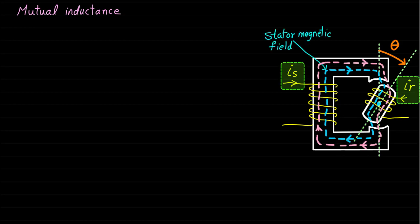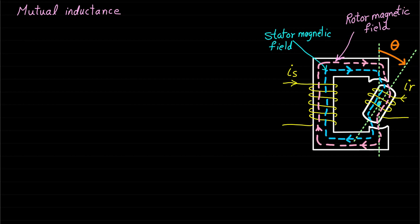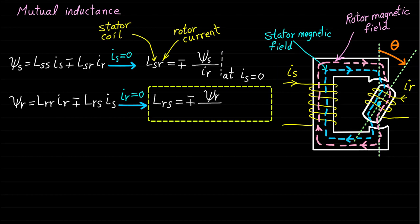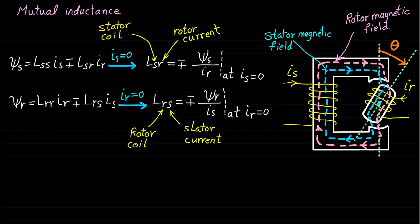Now let's move on to the mutual inductance. The mutual inductance exists because of the interaction between magnetic fields of the stator and rotor excitation currents. In other words, if both coils have currents, then definitely we will have magnetic field interaction between the two coils. The mutual inductance value depends on how much magnetic field generated by one coil goes to link the second coil. The mutual inductance can be calculated mathematically using: Lsr equal to Psi-S over IR at IS equal to zero, or Lsr equal to Psi-R over IS at IR equal to zero. Note that Lsr equals Lrs because they have the same geometry. The mutual inductance can be denoted by the capital letter M.